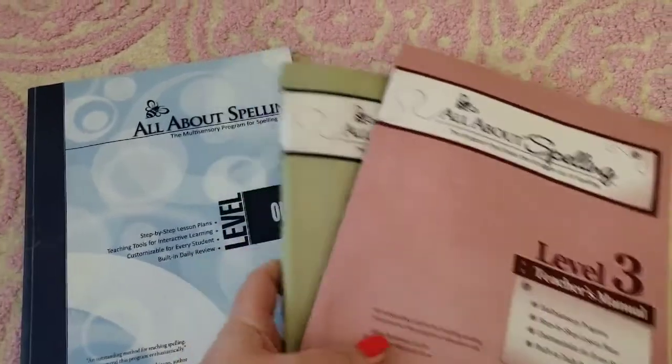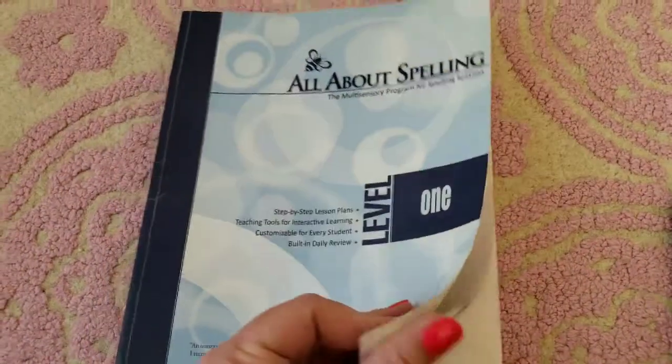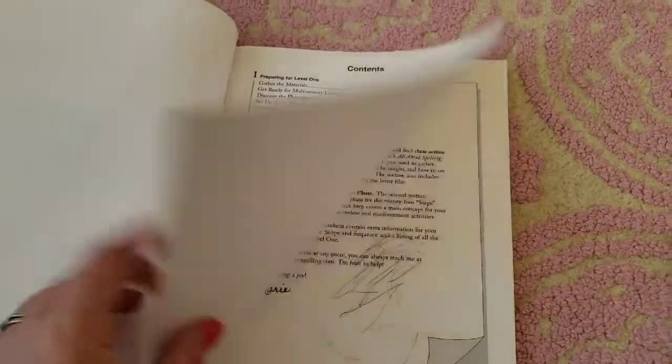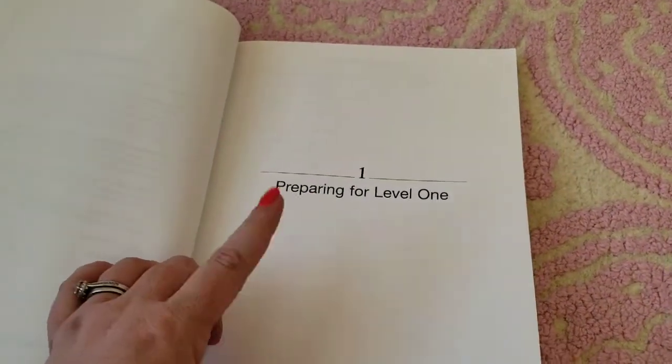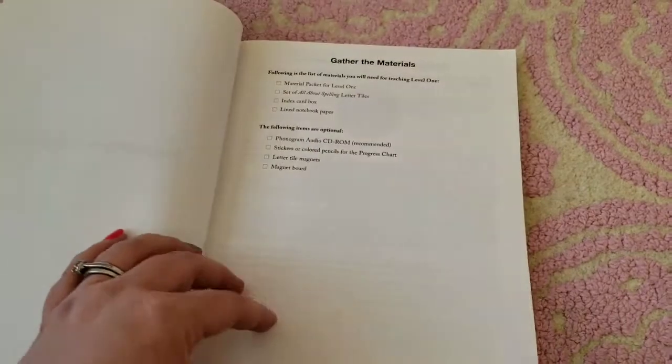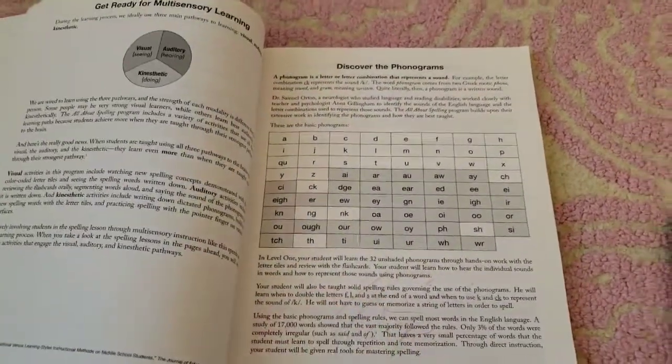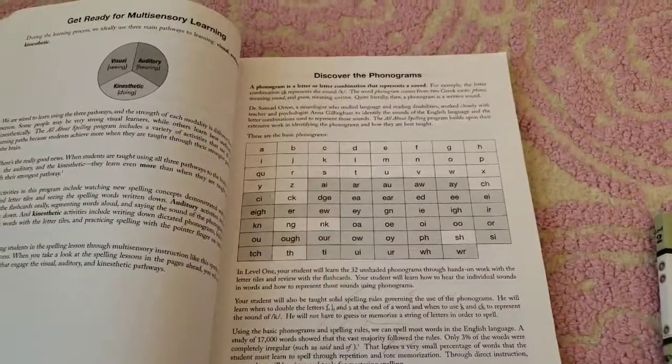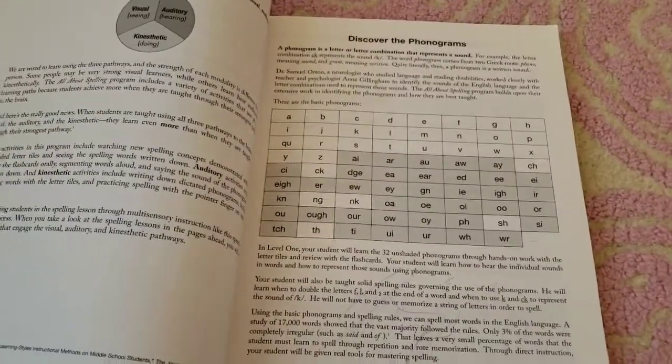So here is book one and what it looks like inside. This is preparing for level one and it tells you as the teacher everything you need to know and explaining how you're going to teach this program. There is definitely a way. The thing with this program is they use tiles, they use flashcards, they use writing, and that's supposed to be what helps them as they're getting all different kinds of learning.